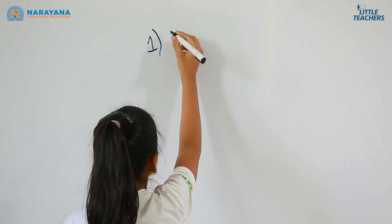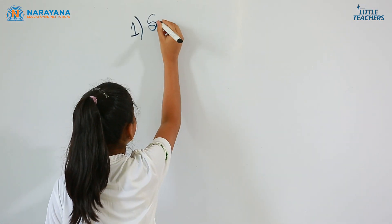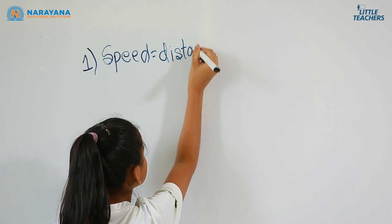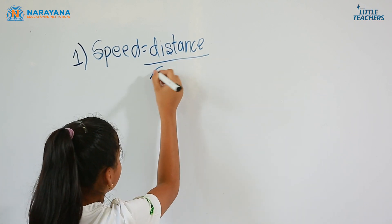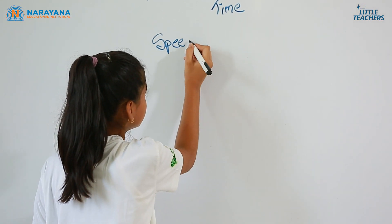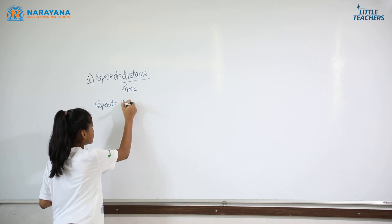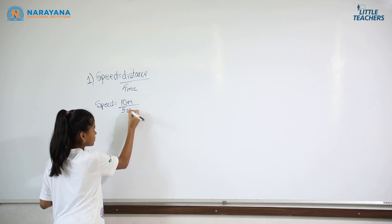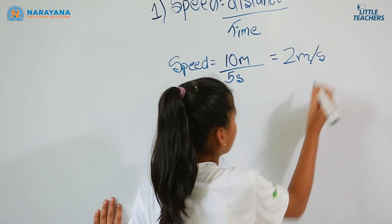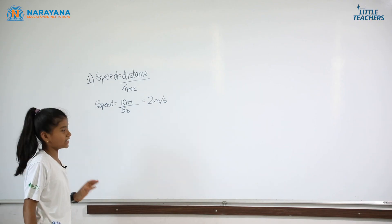First question: we have to find speed, so we will use the formula Speed = Distance / Time. The speed of the scooter equals 10 meters divided by 5 seconds, which is equal to 2 meters per second. The unit of distance is meters and the unit of time is seconds, so the answer is 2 meters per second.